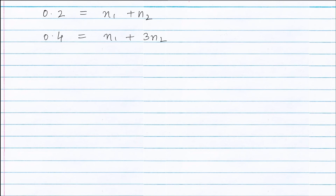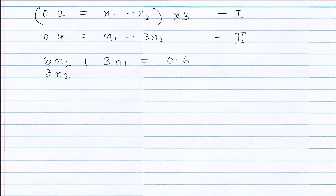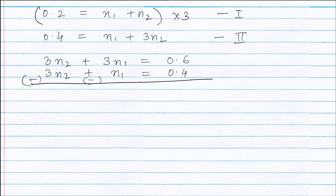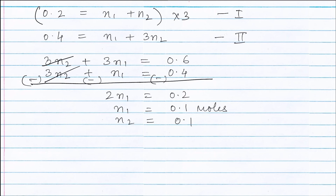Multiplying Equation 1 by 3 gives 3N1 + 3N2 = 0.6. Subtracting Equation 2 from this: 3N2 and 3N2 cancel, giving 2N1 = 0.2, so N1 = 0.1 moles. Substituting N1 back into Equation 1, we get N2 = 0.1 moles.